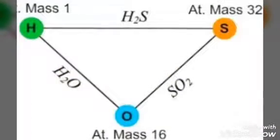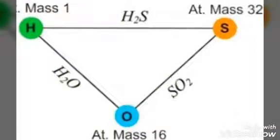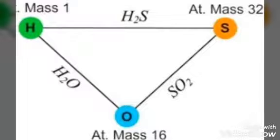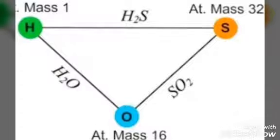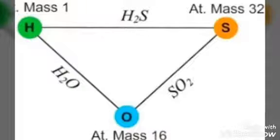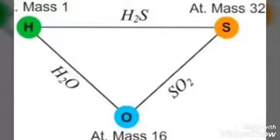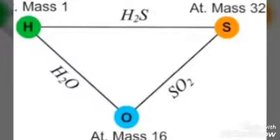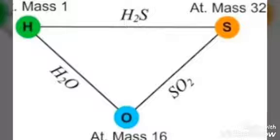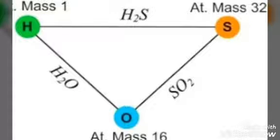Let us consider three elements: hydrogen, sulfur, and oxygen. Hydrogen combines with oxygen to form water, whereas sulfur combines with it to form sulfur dioxide. Hydrogen and sulfur can also combine together to form H2S.